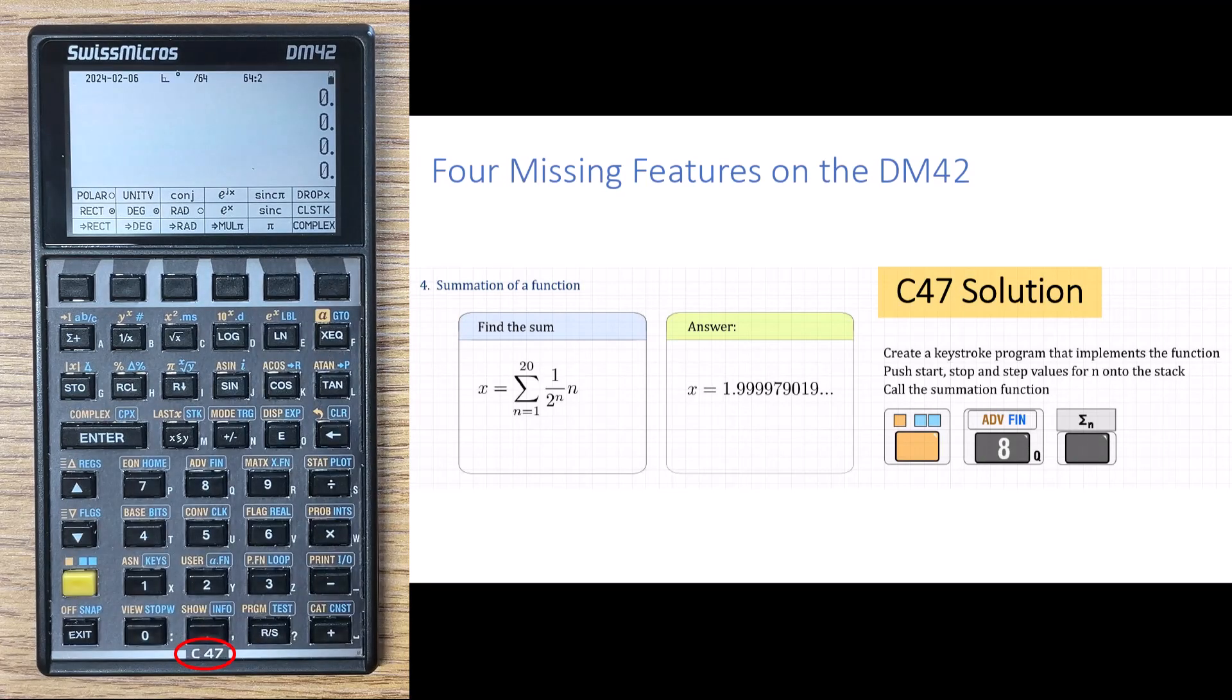Here we're asked to do a summation of a function over a range, a summation of a function. So the only way to do this on the DM42, as well as on the C47, is to write a program that implements this function. It's probably a really good skill to learn on these RPN calculators. It's a really good skill to learn how to key in a keystroke program. So we're going to do it.